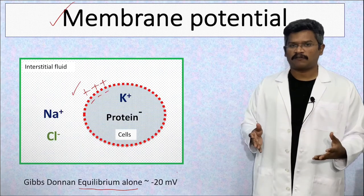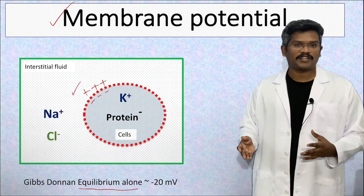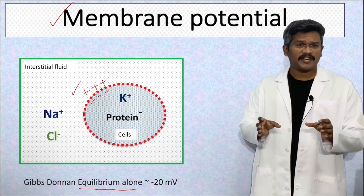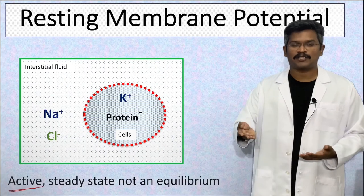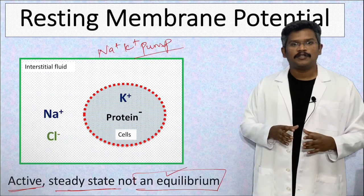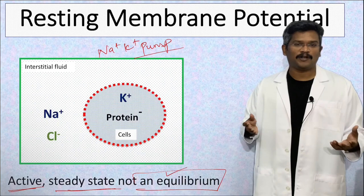So the passive redistribution of ions by this effect is not the only reason behind the concentration gradient. The concentration gradients in the cell are maintained by active transport mechanisms like sodium-potassium ATPase. So the resting membrane potential is an active steady state and not a passive equilibrium.